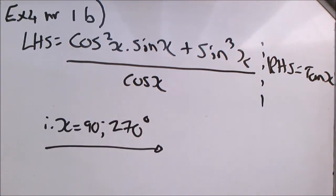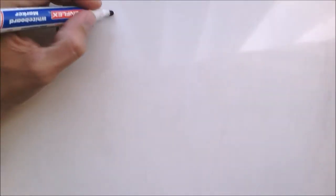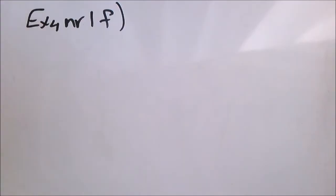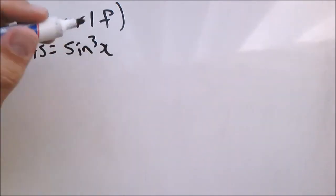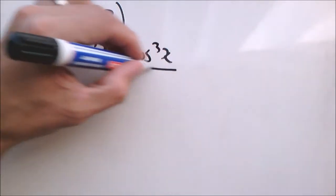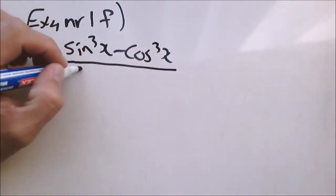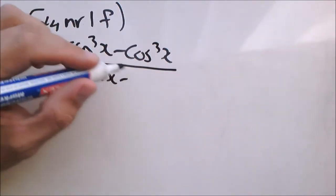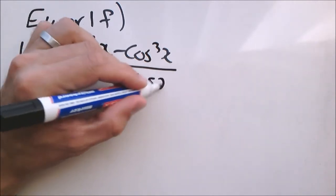The second example is from the same exercise, exercise 4, number 1f. And its left hand side is equal to sin cubed x minus cos cubed x divided by sin x minus cos x.